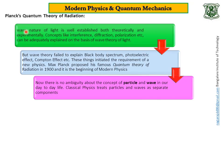Dear students, wave nature of light is well established both theoretically and experimentally. Concepts like interference, diffraction, polarization can be adequately explained on the basis of wave theory of light. But, same wave theory failed to explain problems like black body spectrum, photoelectric effect, Compton effect. These things initiated the requirement of a new physics.